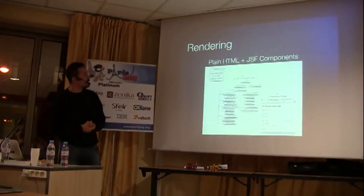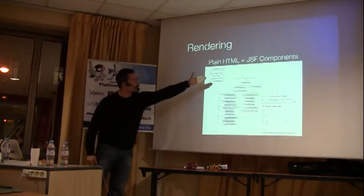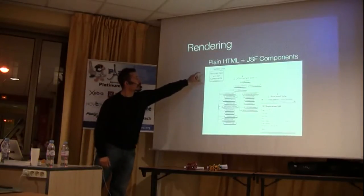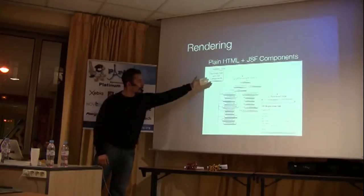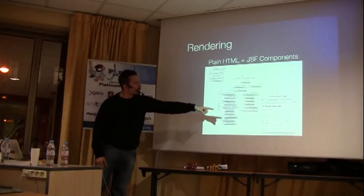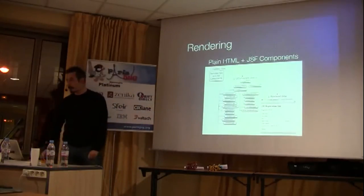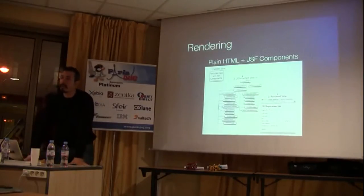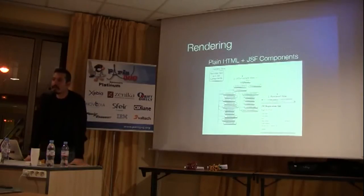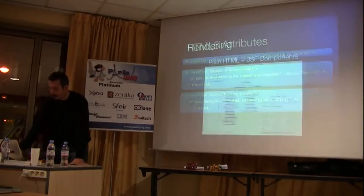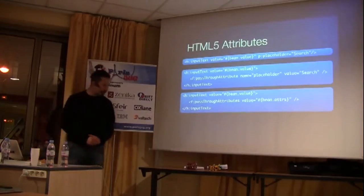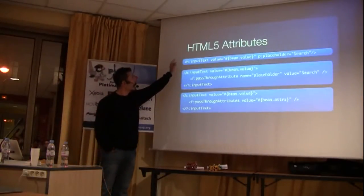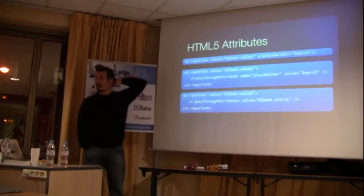So let's start with the rendering of HTML5 attributes. This is how JSF works. We have the component tree here. These Facelets views, XHTML views, create the component tree. And in the rendered view we get HTML most of the time. So this is how the rendering works. The component has specific attributes like value, ID, and name. But they are limited — what if we would like to have some placeholder attributes that are not available? For PrimeFaces it's easy, we can just add these attributes. But JSF implementations cannot do it.